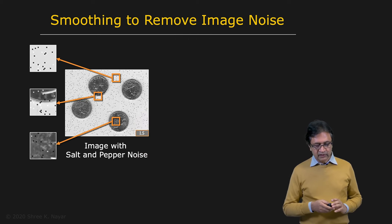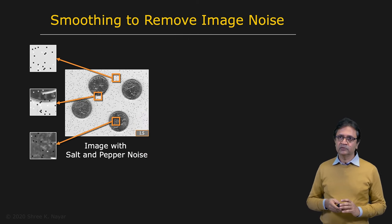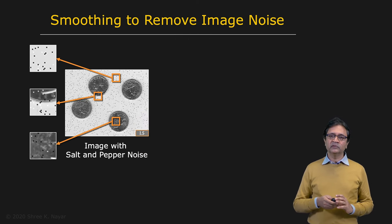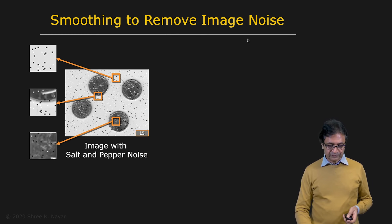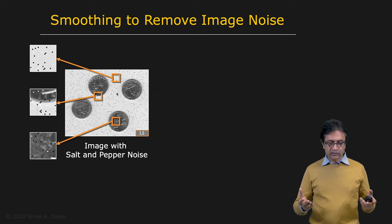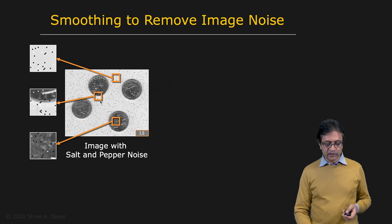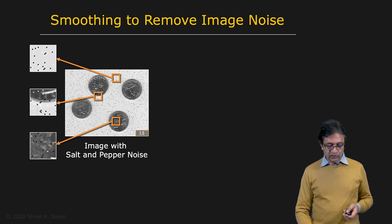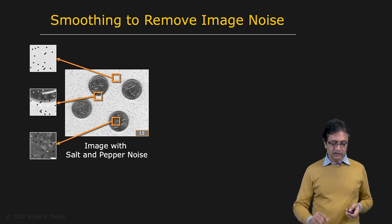Here is an example. Let's start with the problem of smoothing an image to remove noise. Here you have an image which has some salt and pepper noise in it — you see these white and black dots. These are scattered over the image, but very strong, very prominent. We want to remove this from an image before we further process it. In doing so, we want to preserve the information on these coins, which we'll treat as our signal.